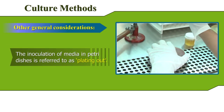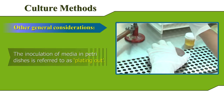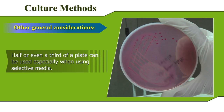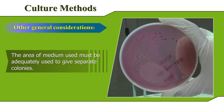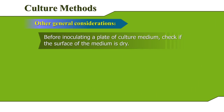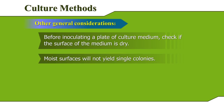The inoculation of media in petri dishes is referred to as plating out. It is not necessary to use whole plates of media for every specimen — half or even a third of a plate can be used, especially when using selective media. The area of medium used must be adequately covered to give separate colonies. Before inoculating a plate, check if the surface of the medium is dry, as moist surfaces will not yield single colonies.